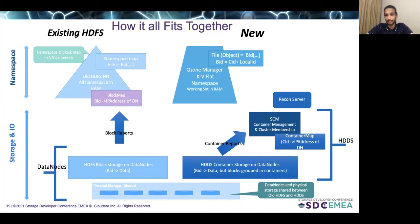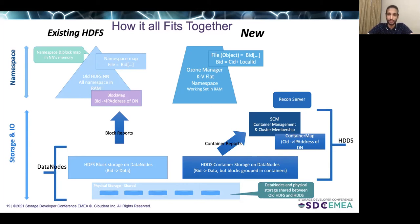The working set is configurable. Like the name node, Ozone Manager also maintains a mapping from a file or object to the set of block locations or blocks which comprise that file. A block ID is a combination of container ID and local ID. Container ID is a global ID assigned by SCM, and local ID is local to the container where that block is present. This provides a very clean separation of the container space or data layer from the namespace, which helps a lot in easier management of an Ozone cluster.